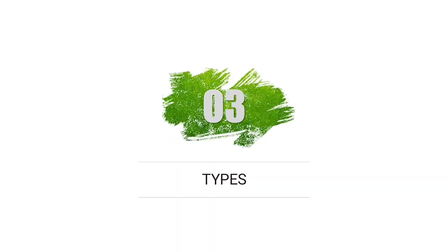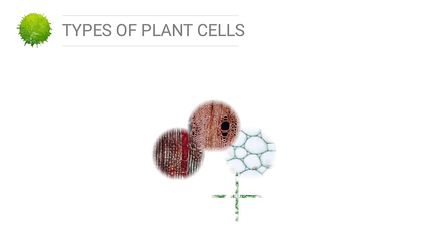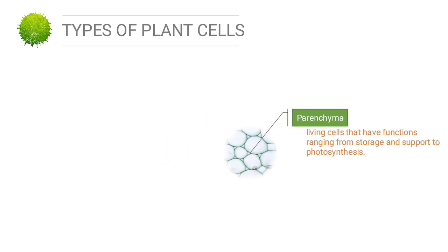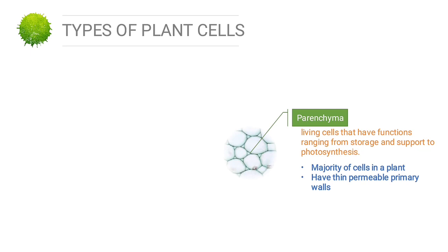Third discussion — types of plant cells. There are five types: phloem, xylem, parenchyme, sclerenchyme, and collenchyme. Parenchyme cells are living cells with functions ranging from storage and support to photosynthesis. They are the majority of cells in a plant, have thin permeable primary walls enabling transport of small molecules, are found in leaves and carry out photosynthesis and cellular respiration, and also store substances like starches and proteins and have a role in plant wound repair.